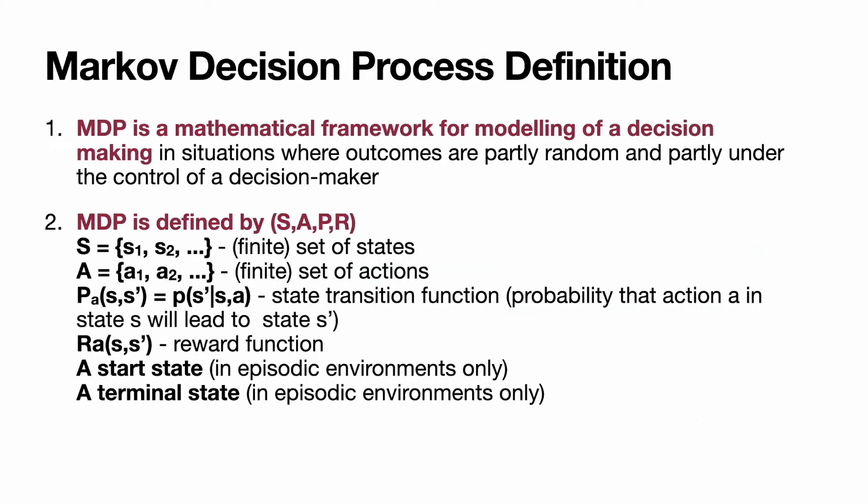If we describe an MDP mathematically, we will say that this is a mathematical framework for modeling of decision making in a situation where outcomes are partly random and partly under the control of a decision maker. Decision making is what should we do in this particular situation. What would be the best action?